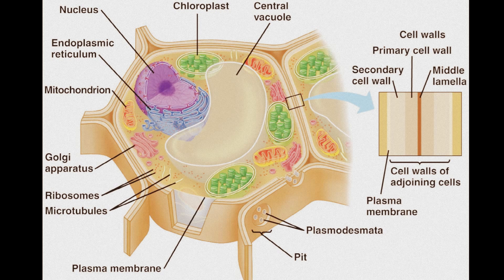Moving on to plant cells — first up, their function. Plant cells carry out different tasks that help keep a plant alive and healthy over the course of their lifetime. For example, the chloroplasts carry out photosynthesis. Plant cells are also the smallest unit in a plant. Key differences between plant cells and animal cells: plant cells have cell walls while animals don't. They're the only ones that have chloroplasts and they're the only ones that have plastids.